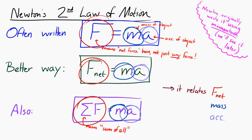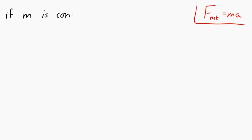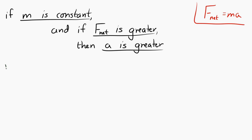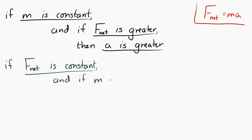Let's think about this a little bit. If we have an object where the mass is kept constant — so we always have the same object, same mass — and if I apply a greater net force to that object, Newton's second law suggests that the object will have a greater acceleration. Also, if the net force is kept constant but we apply that net force to an object with greater mass, then Newton's second law suggests that we should get less acceleration if the mass is greater.